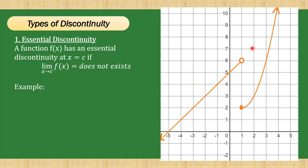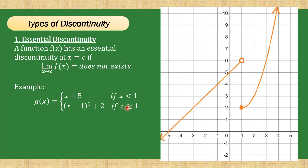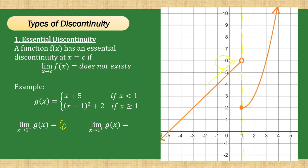For example, we have the function g of x defined as x plus 5 if x is less than 1 — which gives the linear part of the graph — and the quantity x minus 1 squared plus 2 if x is greater than or equal to 1, which is the parabolic part. This piecewise function exhibits essential discontinuity because the limit does not exist. From the left, as x approaches 1, the function approaches 6; from the right, it approaches 2. Since they are not the same, the overall limit does not exist.